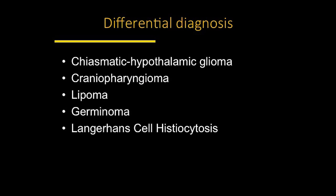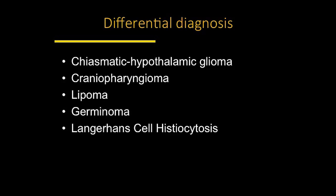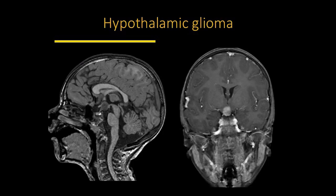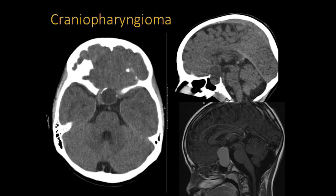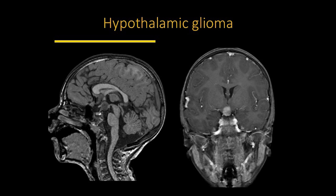There are other lesions in the hypothalamic region that form the differential diagnosis — some benign, some more aggressive tumors. For example, this T1 pre-contrast image shows a lesion within the hypothalamus that looks like a hypothalamic hamartoma. However, after contrast it lights up intensely — not characteristic of a hamartoma. This was a hypothalamic glioma. In general, these patients present with different symptoms: they usually do not have gelastic seizures or precocious puberty.